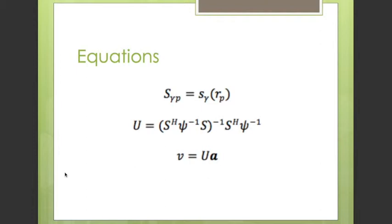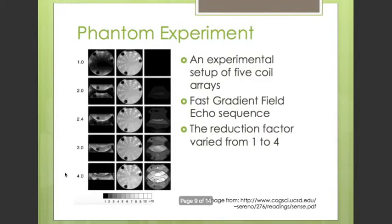Some phantom experiments have been conducted with different reduction factors. An experimental setup of five coil arrays was arranged and a fast gradient field echo sequence was used. The reduction factor varied from 1 to 4, with one indicating no reduction. The left column shows the conventional sum of squares, the middle shows the SENSE reconstruction, and the right column shows the noise. Although the images don't show a significant artifact with increasing reduction factor, they show an inhomogeneity in noise distribution, with higher noise intensity in the middle.